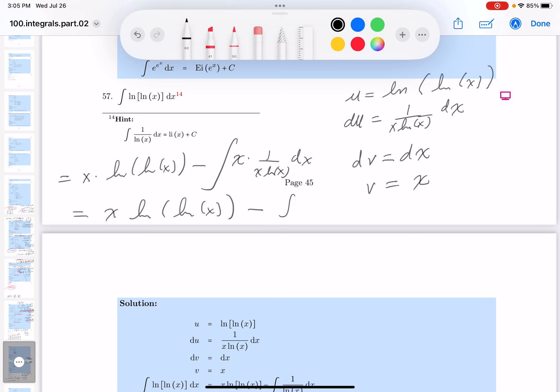So x·ln(ln(x)) minus the integration of 1 over ln(x) dx equals x·ln(ln(x)) minus li(x) plus some constant of integration. Put a box in this.